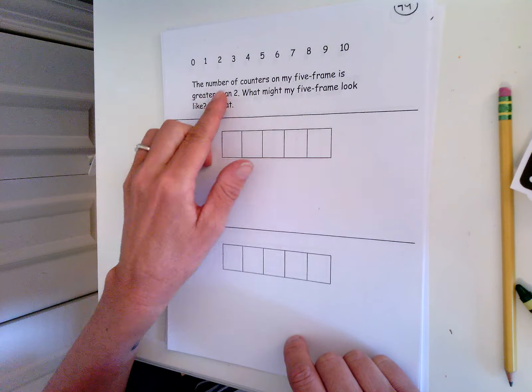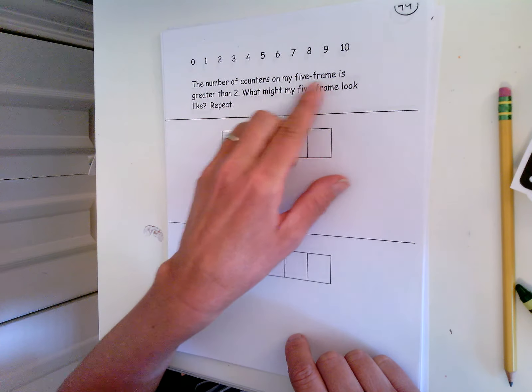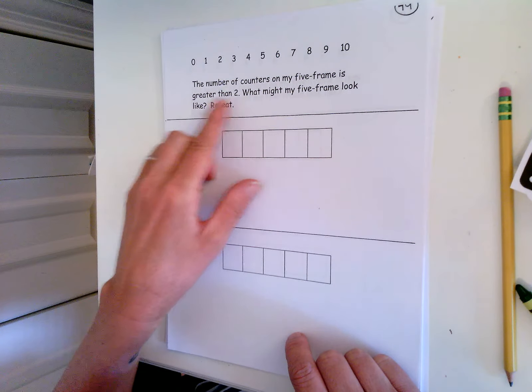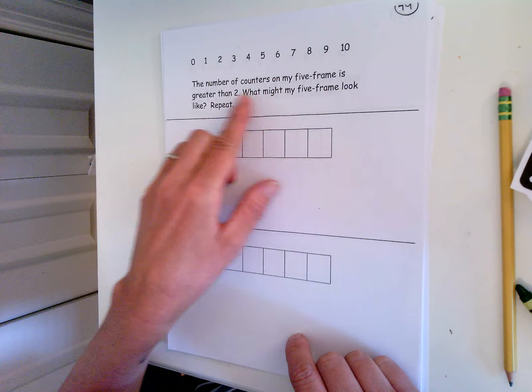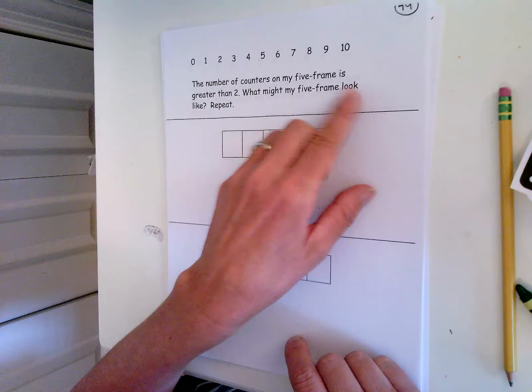The number of counters on my five-frame is greater than two. What might my five-frame look like? Repeat.